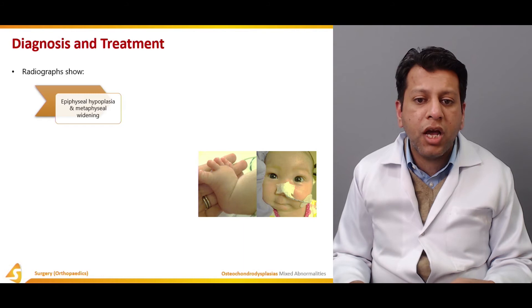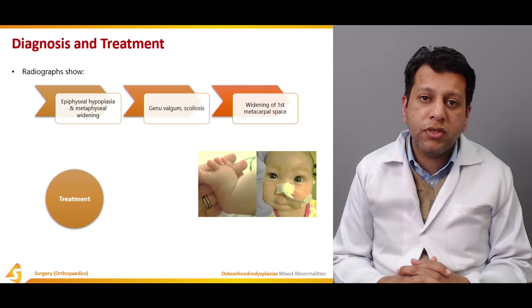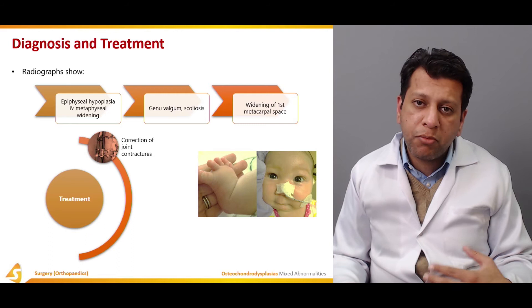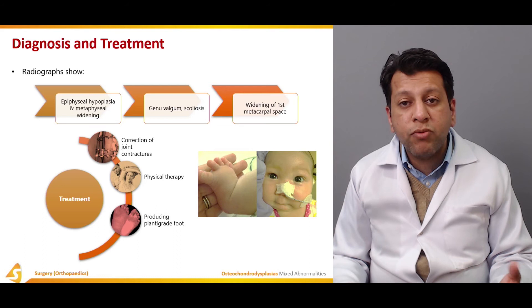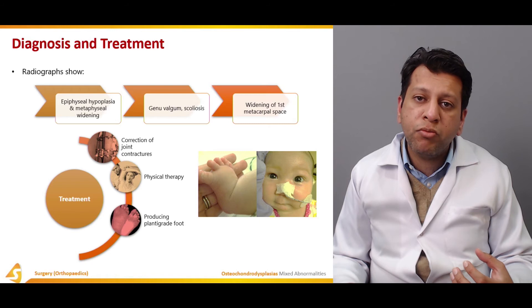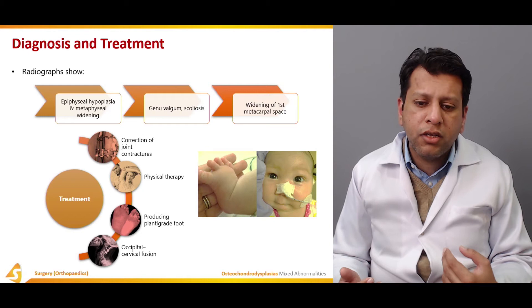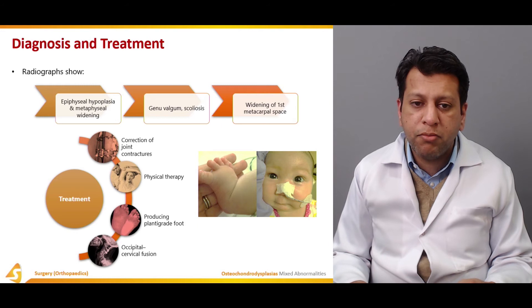Radiographs for diastrophic dysplasia usually show epiphyseal hypoplasia, metaphyseal widening, genu valgum, scoliosis, and widening of the first metacarpal. Treatment addresses complications: initial correction of joint contractures via physiotherapy or surgically. Physiotherapy also helps the patient ambulate. If clubfoot is present, surgery is performed to achieve a plantigrade foot so the patient can walk. In cases of atlantoaxial instability, occipitocervical fusion is the treatment of choice, providing sufficient spinal stability to prevent neurological compromise later in life.